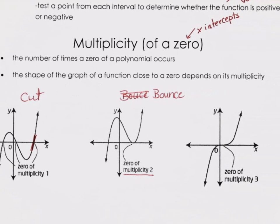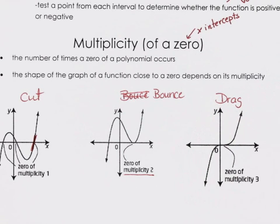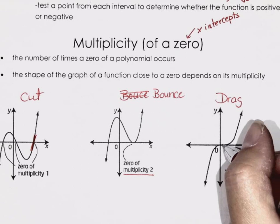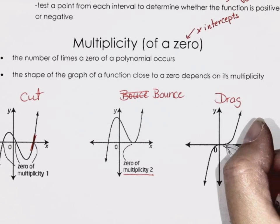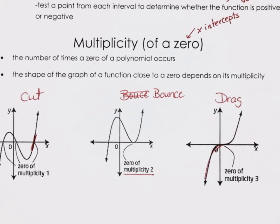If it's a multiplicity of three, it's called a drag. You go through the point but you kind of drag through it — we saw that with our tangent graph, that shape that drags through zero. These happen a lot in cubic functions. So if my x-intercept is here, we're just dragging through it — it's like a cut but a drag through.